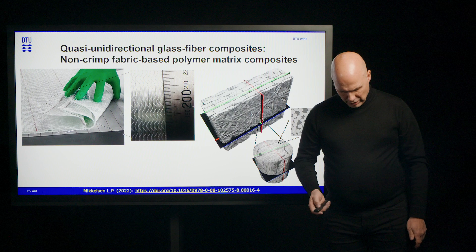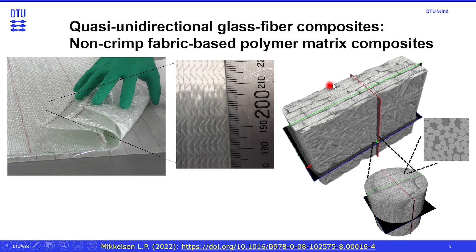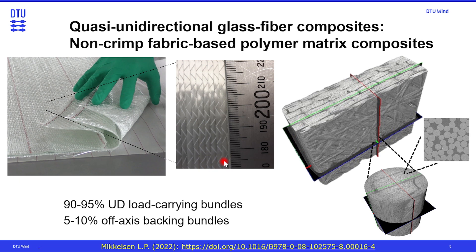I have also shown an x-ray tomography picture of the cross section of such a material. If we zoom in enough, we can see the individual fibers, which for glass fibers are round fibers with a diameter of typically around 15 to 20 microns. When looking at the UD part of the composite cross section, 90 to 95% of the fiber is in the UD direction, and there is a small amount of backing with differently oriented fiber.